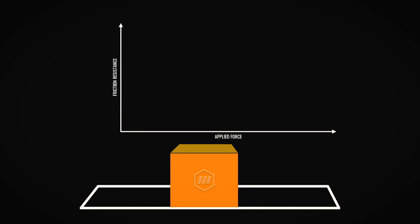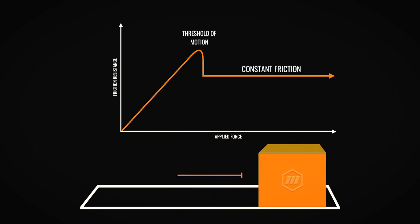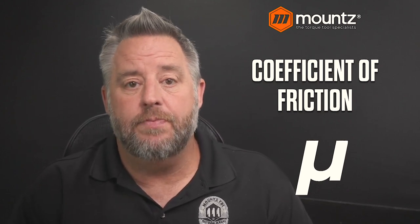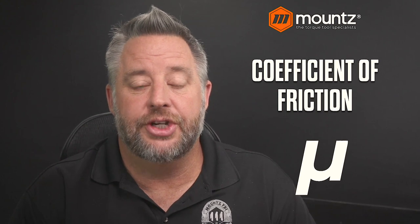As we apply force or load to our cube, we overcome our threshold of motion and then we move into our constant friction state, or our coefficient of friction. When you are looking at the symbol for the coefficient of friction, it is represented by the Greek letter mu. So if you see this symbol, we're talking about the coefficient of friction.